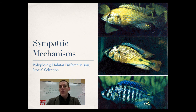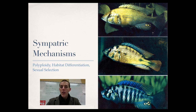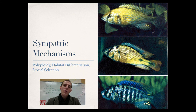Sexual selection is another mechanism — like the birds of paradise on the Discovery Channel. A group of birds living together may develop vastly different mating rituals or appearances, so that though they are together and could probably mate, because of those rituals they no longer interact with one another. All of these — polyploidy, habitat differentiation, and sexual selection — are types of sympatric speciation, where speciation occurs even though the animals are still in contact with one another.